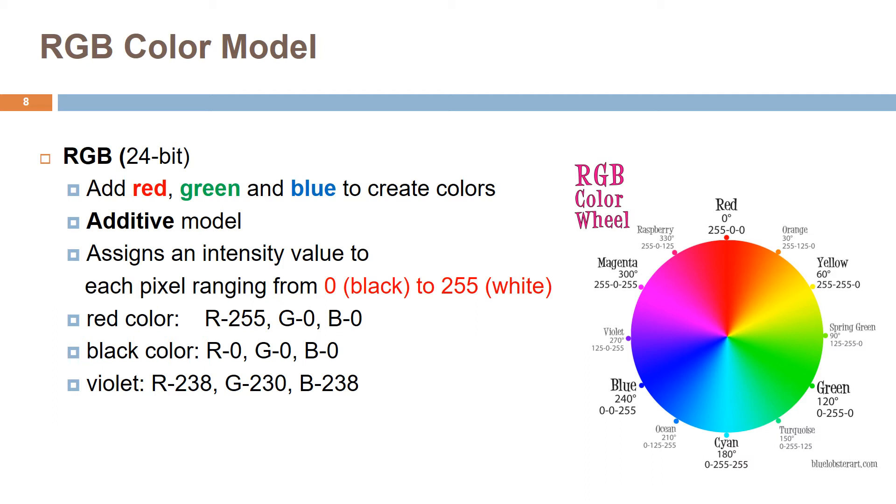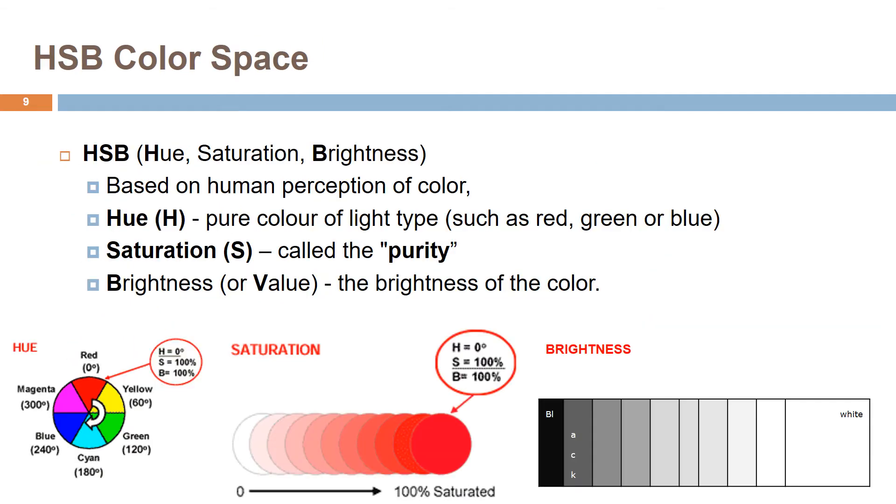For example, red can be represented as red is 255, green is 0, and blue is 0. Another example is violet represented as red is 238, green is 130, and blue is 238. The HSB: hue, saturation, brightness color model defines a color space in terms of three components.